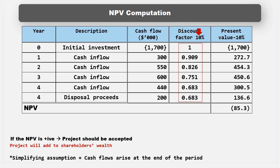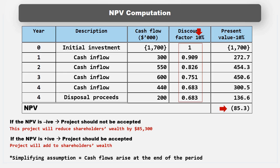In this case, the NPV is negative and this would suggest the project should not be undertaken, because to do so will reduce the value of the business by $85,300.